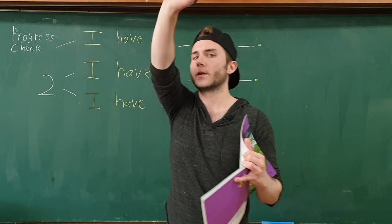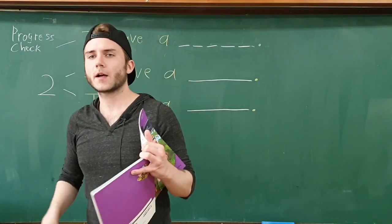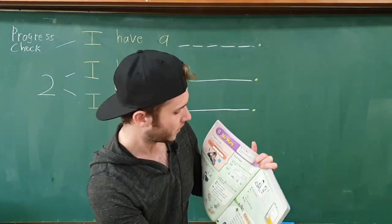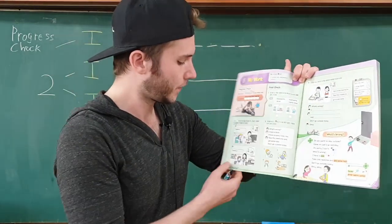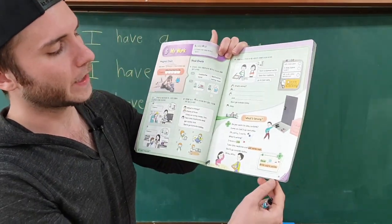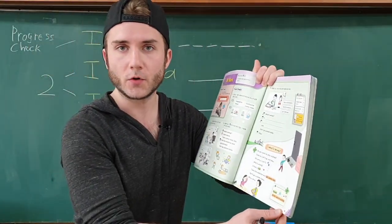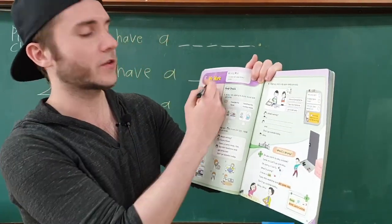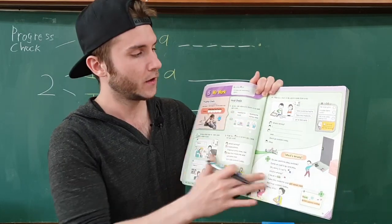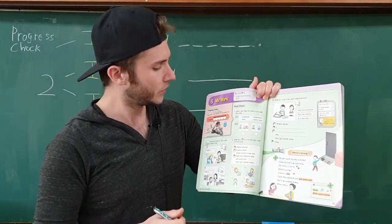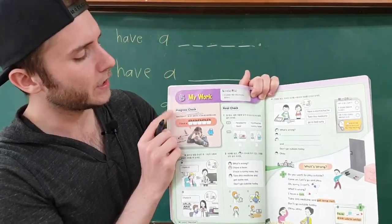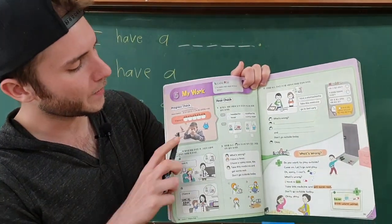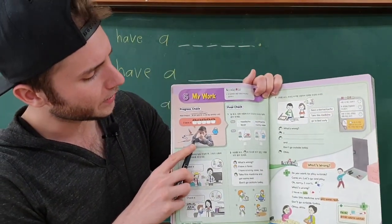Hello everybody, we are wrapping up lesson two called 'I Have a Cold,' and today we are looking at pages 34 and 35 in your textbook. I'm going to walk you through doing some writing activities from these two pages. Let's start up here with the progress check — we've got a picture of a boy who's sick.